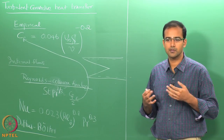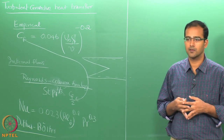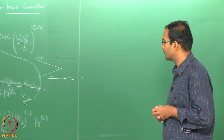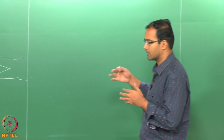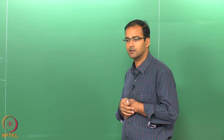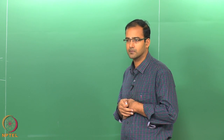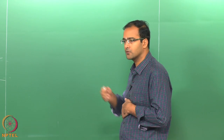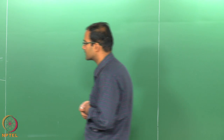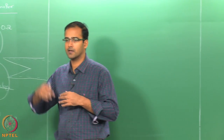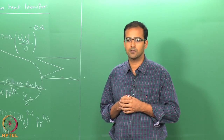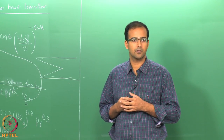For more complex flows, numerical solutions are needed. However, we should look at modifications to the basic analogy. Although the Reynolds analogy is very useful and widely used, since it considers the entire boundary layer as turbulent, it is not the most accurate representation of the turbulent boundary layer profile.